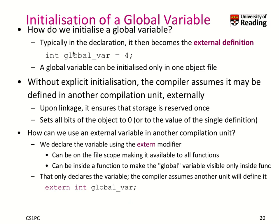How do we initialize a global variable? Typically we do this in the declaration. If it is assigned a value, it becomes an external definition — meaning we reserve the memory for it. You can initialize a global variable only in one object file, but you can declare it in multiple files. When you don't initialize it, the compiler assumes it may be defined in another compilation unit externally, and upon linkage it ensures storage is reserved once. If a global variable is never initialized, it is automatically initialized to zero.